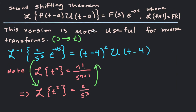The second shifting theorem, Part 1, says that the Laplace transform of f(t-a)·u(t-a) equals F(s)·e^(-as), where F(s) is just the Laplace transform of f without the t minus a, times e to the negative as. That's the second shifting theorem in its first form.